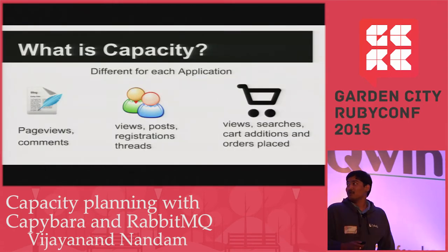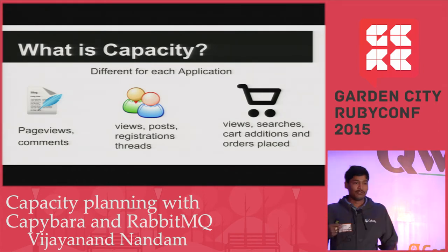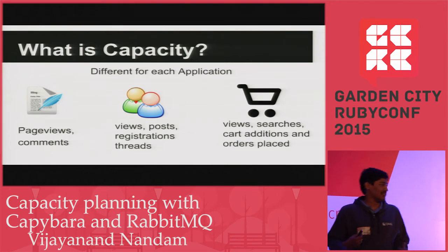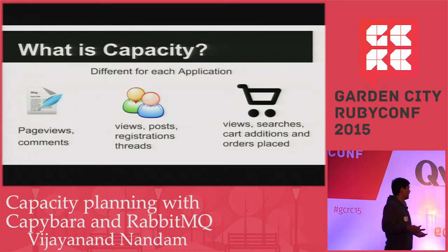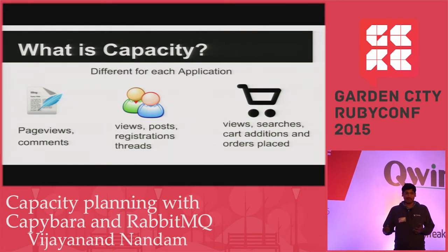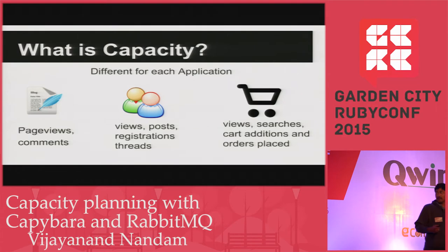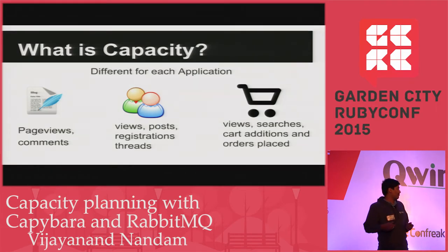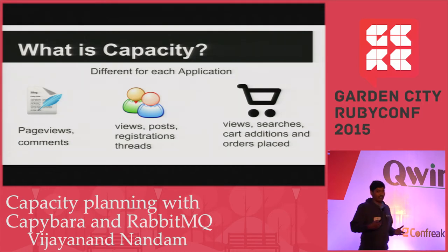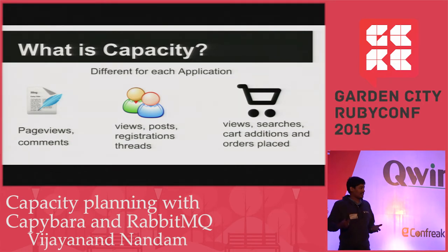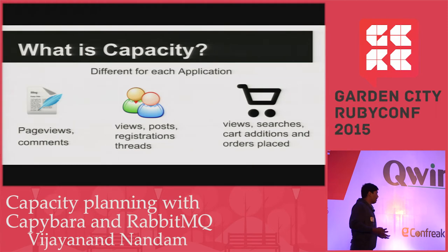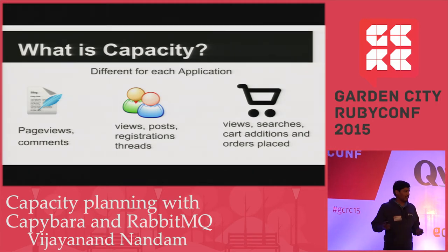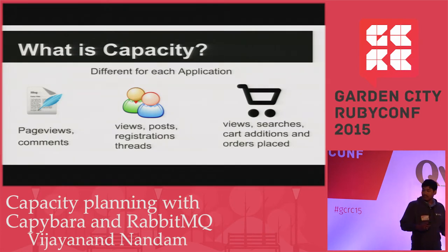So what is capacity? We build web apps every day, and each web app has a different purpose, so capacity is not universal. For a blog, capacity is the number of page views or comments it can serve per hour or per day. For a forum, it's the number of posts members can post or the number of registrations it can handle. For an e-commerce application, it's the number of searches or orders it can handle per hour.